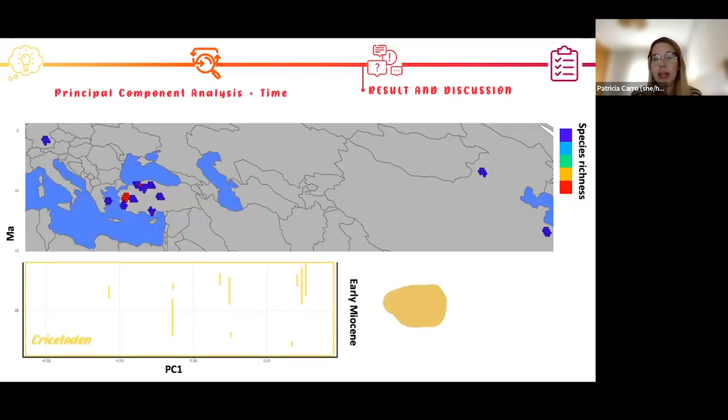So first of all, during the early Miocene, as I said before, this tribe originated in Asia Minor, in Anatolia, but they reached the east part of Asia. You can see we only recorded Cricetodon, the only genus recorded during this period, and the morphological variation is very high.